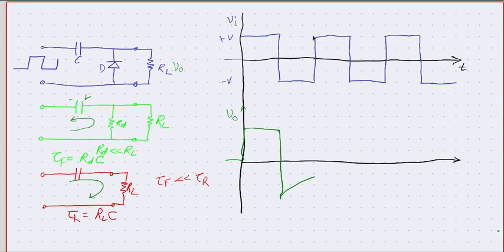Then the input suddenly rises by 2V, so the output also rises by 2V. Now the output voltage is positive, the diode is reverse biased again, and we are back in the RL circuit. As long as the input is high, the discharge is slow, controlled by RL. Then a sudden drop brings the output down, followed by fast charging through Rd, and then another sudden rise.